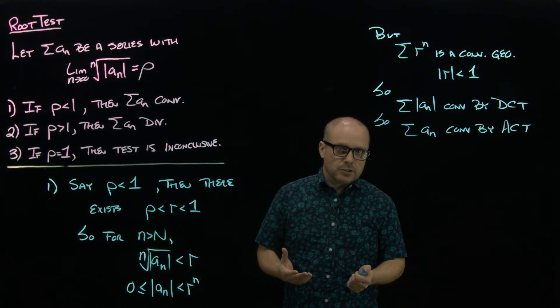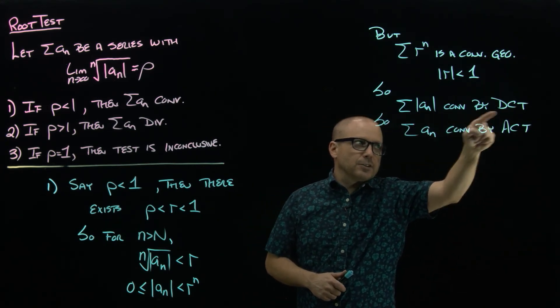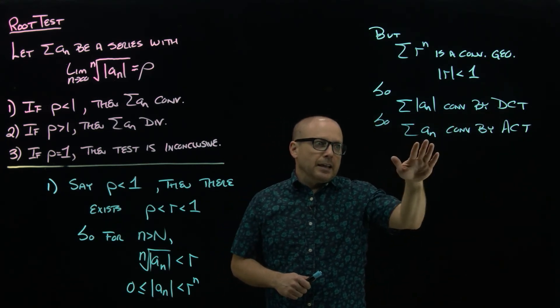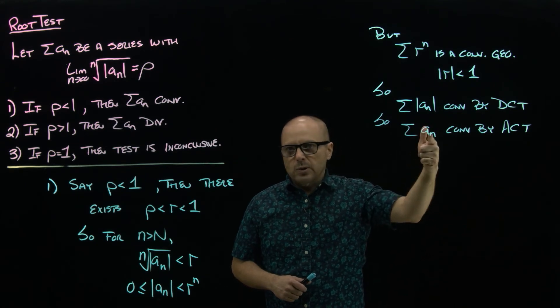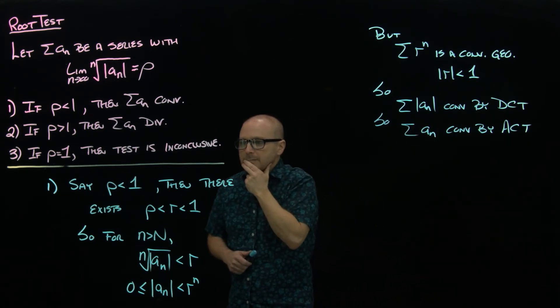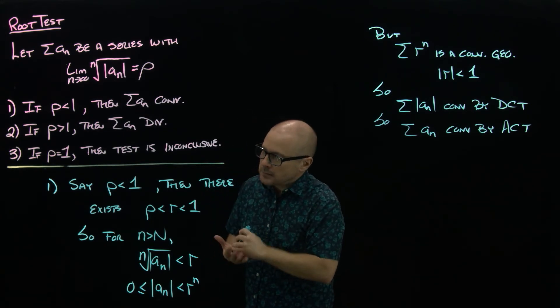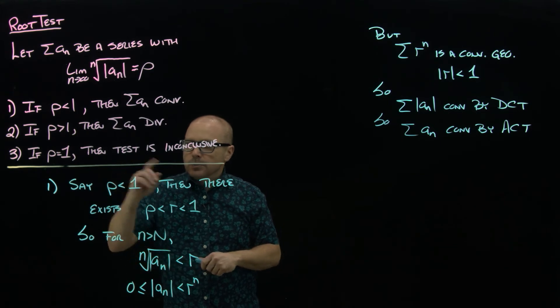And the original series does. Part two is again just flip this argument around, and you have that you're bigger than a divergent, so then the absolute value of that series diverges by DCT, and then you argue nth term test basically. And then what happens in the equals one case?